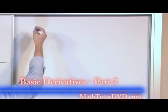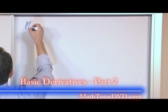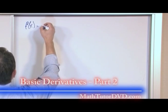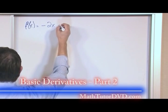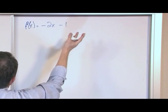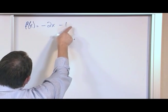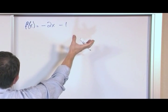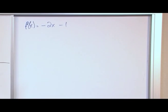For our next one, what if we have f(x) = -2x - 1? How do we take the derivative of this? Notice that we have two terms, and they're basically added together. Even though there's a negative sign here, this could be negative 1. So you could say these are both summed together, so we know we're going to take the derivative of each part separately.